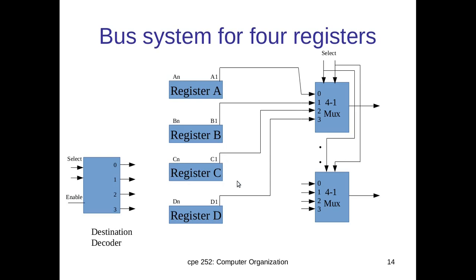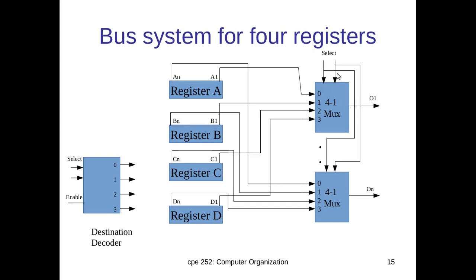Bits A1, B1, C1, D1 are connected to the inputs of the first multiplexer. We have n multiplexers in total, showing only the first and last here. The nth bits from all registers are connected to the last multiplexer: An to input 0, Bn to input 1, Cn to input 2, and Dn to input 3. The output of the mux forms the shared bus lines O1, O2, O3 up to On.